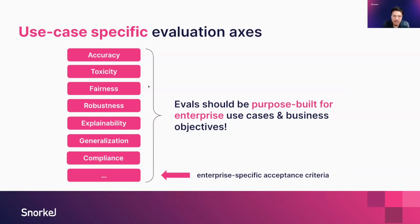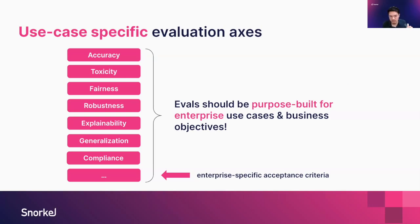The key idea here is that evals should be use-case specific and enterprise specific. Companies should be taking their own definitions and their own specs for what good looks like and encoding it into their evaluations. The sets of acceptance criteria could expand way beyond what standard benchmarks or OSS evals offer. How do you actually build and customize these use-case specific, enterprise specific evals so that they work for your own use case?